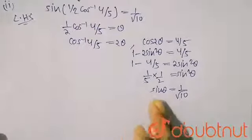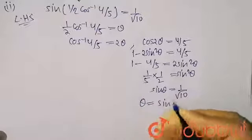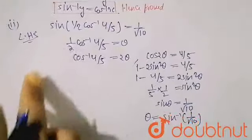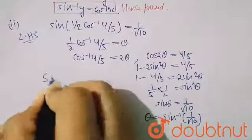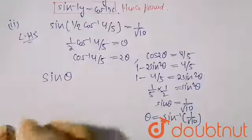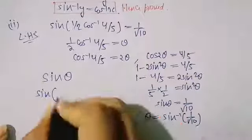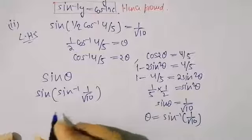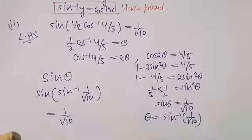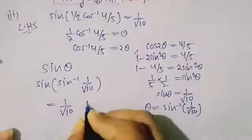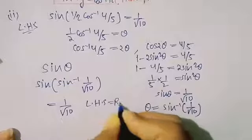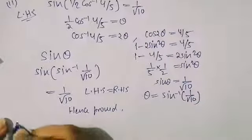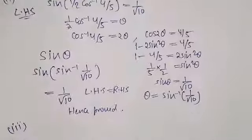Since sin θ = 1/√10, we get θ = sin⁻¹(1/√10). The LHS was sin θ, so substituting back, sin(sin⁻¹(1/√10)) = 1/√10, since sin and sin⁻¹ cancel. This equals the RHS, so LHS = RHS. Hence proved.